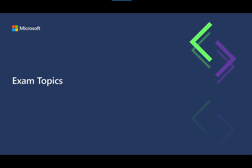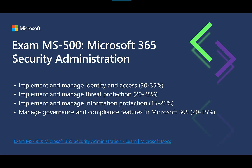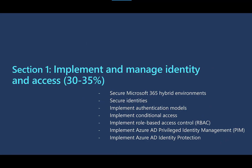Let's talk about the exam topics for the MS-500 exam. There are four main categories: implementing and managing identity and access, implementing and managing threat protection, implementing and managing information protection — things like Azure Information Protection and data loss prevention — and managing governance and compliance features in Microsoft 365. There's a link at the bottom of the slide with more detail on these topics.